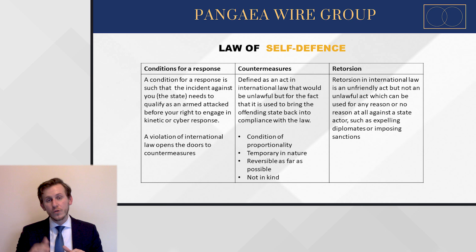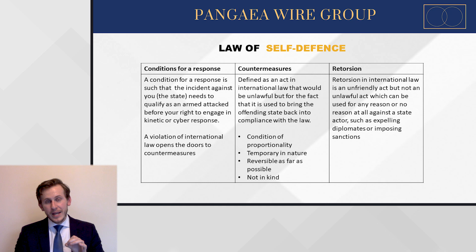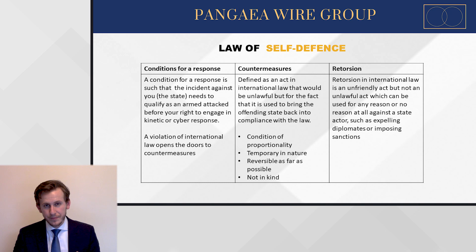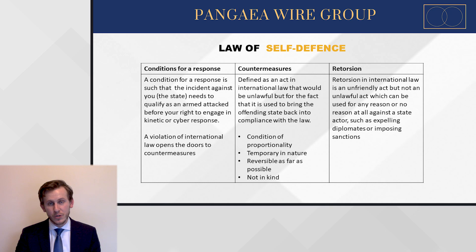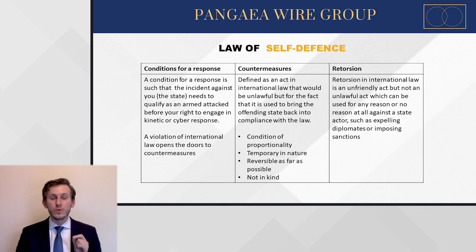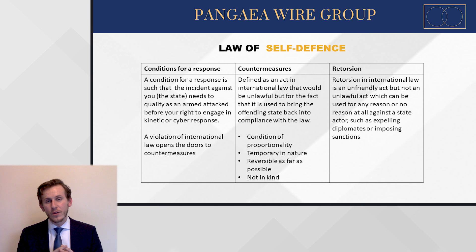If a nation can't pin a certain act to a specific breach of law, what is left is retorsion. A retorsion in international law is an unfriendly act, but not an illegal act, which a state can use for any reason or no reason at all — it's within their prerogative whenever they feel it necessary. Examples of retorsion include the imposition of sanctions and expelling diplomats — as we saw after the Novichok attacks in the UK, where the UK government expelled Russian diplomats, and the US also expelled Russian diplomats, because legally they couldn't really find a direct connection between the Russian government and the act.